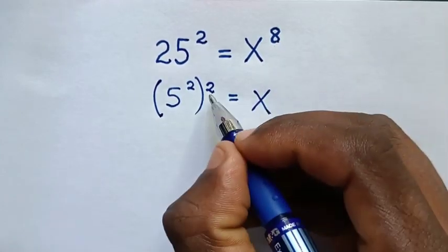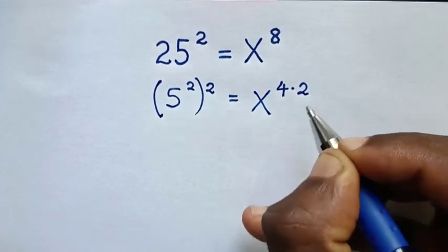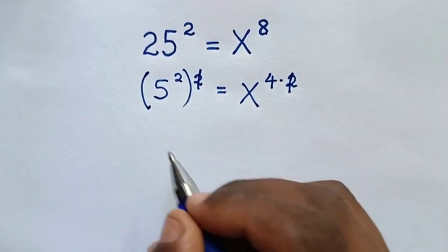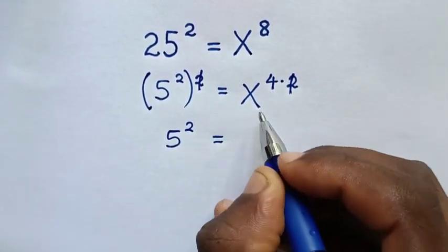Now for this 8, 8 is the same as 4 times 2. Then to simplify, this power of 2 will cancel with this power of 2. So it will be 5² = x⁴.